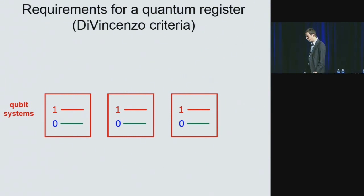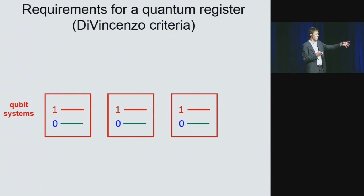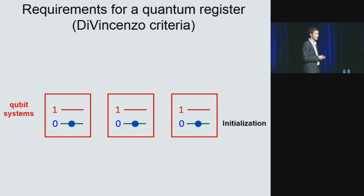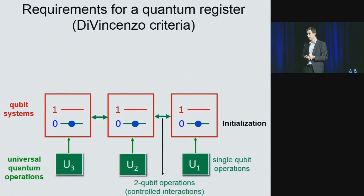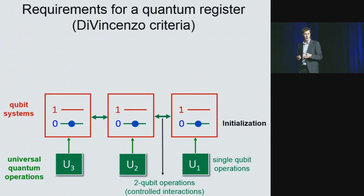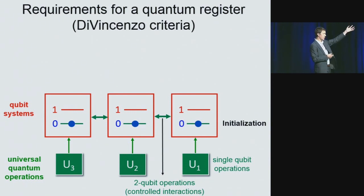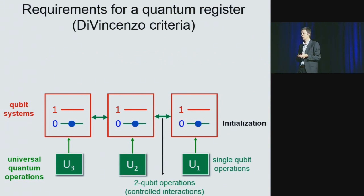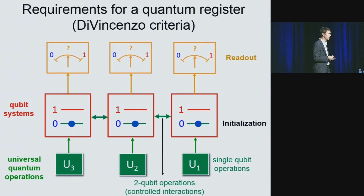What does it take to build such a quantum computer? You need to identify a quantum system where two levels encode zero and one, that can be scaled up. You need to initialize and reset the state, which is non-trivial in the quantum case. You need to compute using a universal gate set — single-qubit rotations combined with controlled interactions between neighboring qubits for conditional logic. And of course, you need to read out the final state.